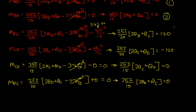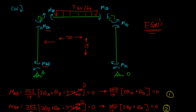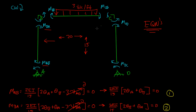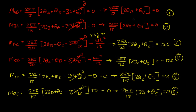So we've found all six equations for the internal moments. We have four unknowns: theta_A, theta_B, theta_C, and theta_D, so we'll need four equations to solve for them. We'll continue that in the next video.